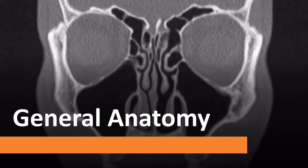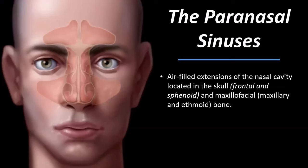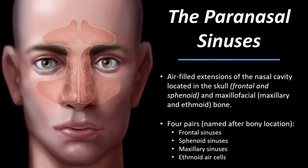Let's get started with general anatomy. What are the paranasal sinuses? The paranasal sinuses are a group of air-filled extensions of the nasal cavity located in the skull — in the frontal and sphenoid bone — or in the maxillofacial bony structures of the maxillary bone and the ethmoid bone. We see three groups on this figure: the maxillary sinuses in the maxillary bone, the frontal sinuses in the frontal bone, and the ethmoid sinuses in the ethmoid bone. So we have four pairs of paranasal sinuses; the one that's missing here are the sphenoid sinuses.